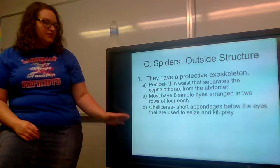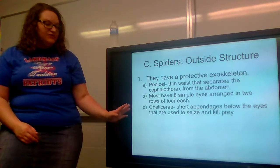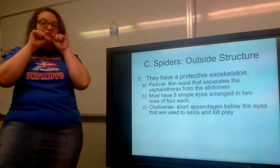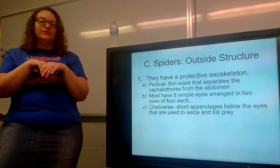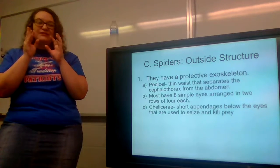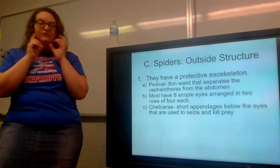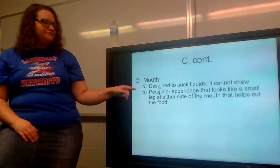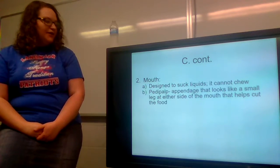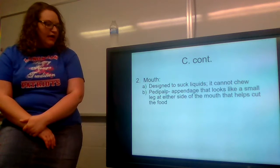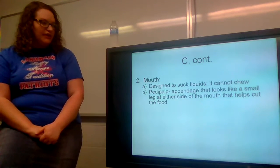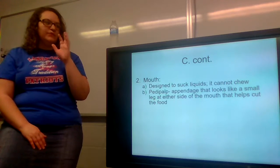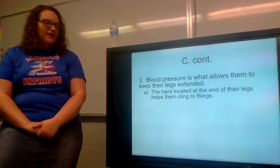Most spiders have eight simple eyes arranged in two rows of four each. They also have the chelicerae — short appendages below the eyes used to seize and kill prey, basically the little claws next to their mouths — almost like sharp pincers that help them hold prey while they feed. The mouth is designed to suck liquids; it cannot chew. They have a pedipalp, an appendage that looks like a small leg on either side of the mouth, that helps cut food so they can suck it up.